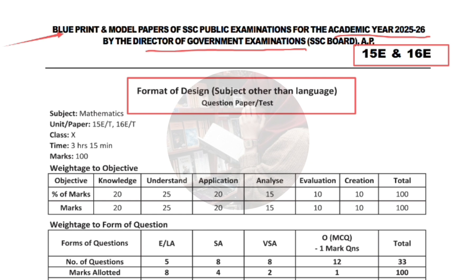For our Mathematics question paper, the paper code is 15E or T, or else 16E or T. This is for Class 10. The time allotted is 3 hours 15 minutes and the total marks is 100. Here we are given three tables — let's go through each one.